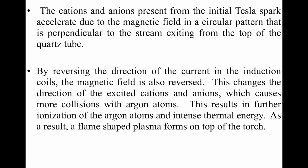The cations and anions present from the initial Tesla spark accelerate due to the magnetic field in a circular path perpendicular to the stream exiting from the top of the quartz tube. By reversing the direction of the current in the induction coil, the magnetic field is also reversed. This changes the direction of the excited cations and anions, causing more collisions with the argon atoms, resulting in further ionization of argon atoms and intense thermal energy. As a result, a flame-shaped plasma forms on top of the torch.